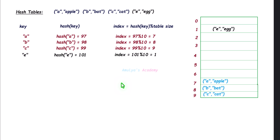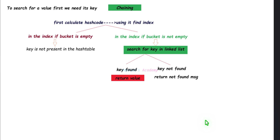This is about the simple hash table with no collision. Next, to search a key-value pair in a hash table where collision is handled using the chaining method: first calculate the hash code and find the index, then check whether that slot is empty. If the slot is empty, print the not-found message. If the slot is not empty, search for the key in the linked list from the beginning. If the key is found, return the value; if not found, return the not-found message.